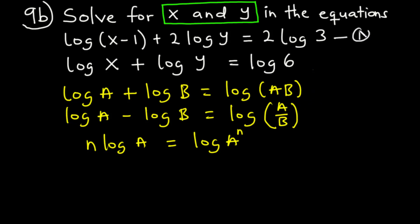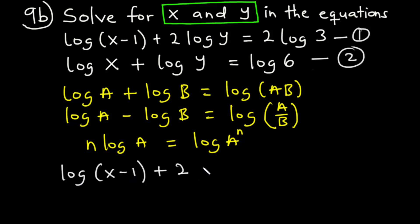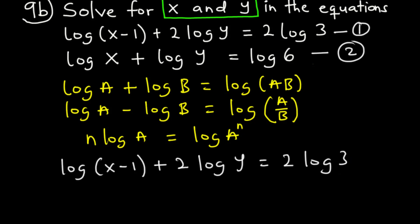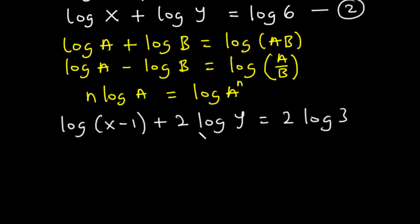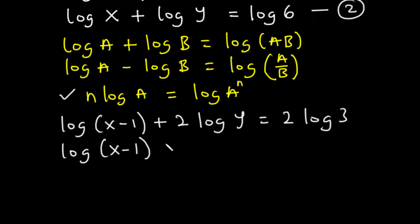Let's call this equation 1 and this equation 2. From equation 1, we have log(x minus 1) plus 2 log y equals 2 log 3. The first thing to do is transfer the 2 to be an exponent of y, so instead of 2 log y we have log y squared. We do the same for 2 log 3 to get log 3 squared.